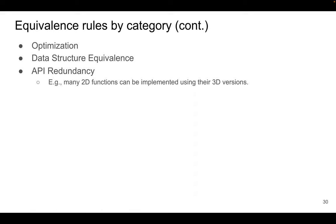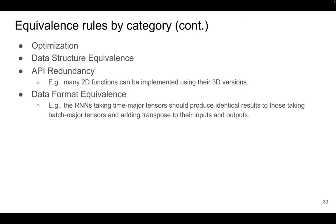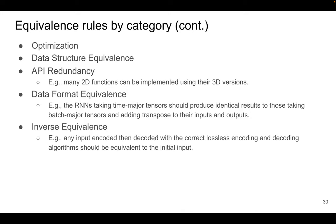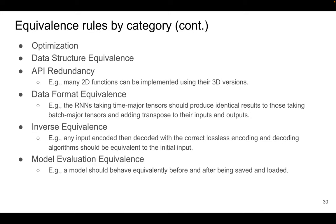There are four other categories. API redundancy contains rules that generate equivalent graphs using different APIs — for example, many 2D functions can be implemented using their 3D versions. Data format equivalence explores different data formats that can become equivalent with a few transformations, such as the batch major and time major example. Inverse equivalence explores inverse functions in deep learning libraries, for example lossless image encoding and decoding. Model evaluation equivalence checks the model's status in evaluation — for example, the model should behave equivalently before and after being saved and loaded.